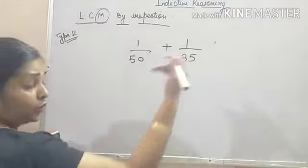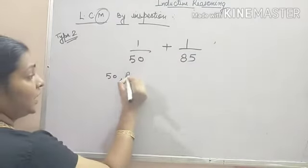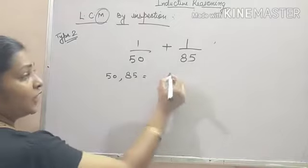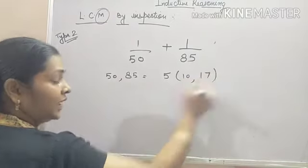Now, what you will do? If you will be going to take out the multiples of 85, it will take time. You can see 50 and 85. Both are having 5 as common. What is left? 10 and 17.